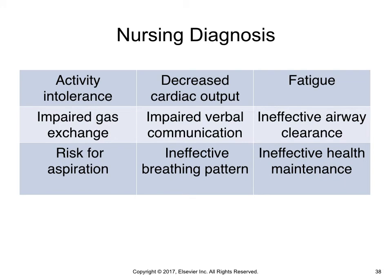Nursing diagnosis: based upon your assessment, you develop nursing diagnoses for patients with oxygenation alterations by clustering specific defining characteristics and identifying the related etiology. The defining characteristics for diagnoses related to oxygenation can be similar. A closer review of assessment findings and analysis of the patient's history will help you clarify and select the correct diagnosis. The cluster of defining characteristics and related factor must support the nursing diagnosis.